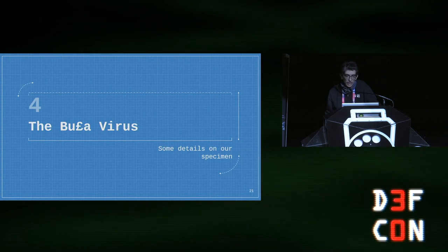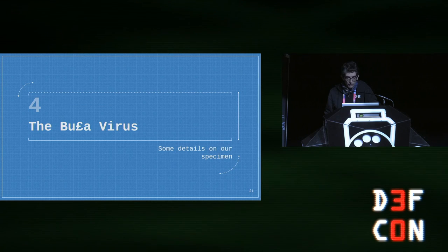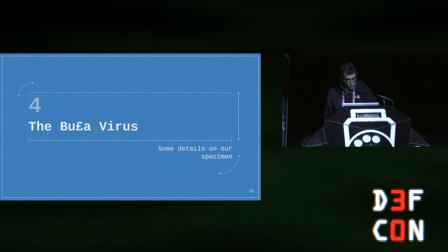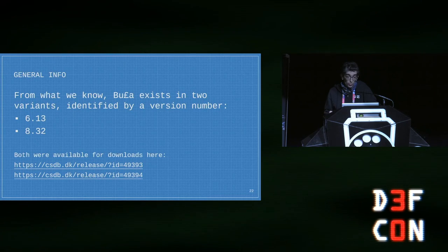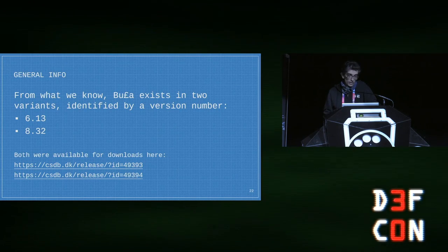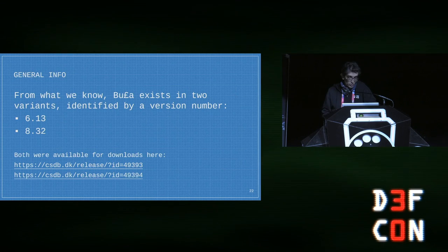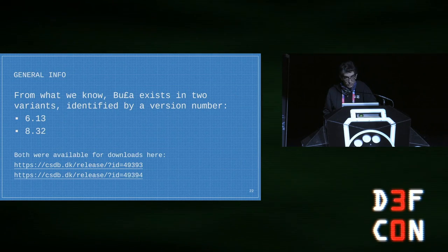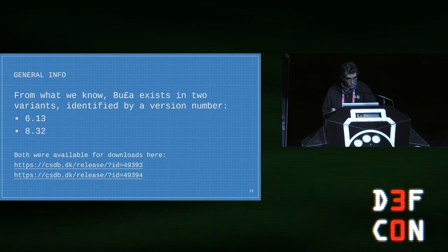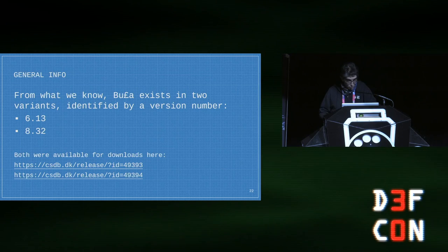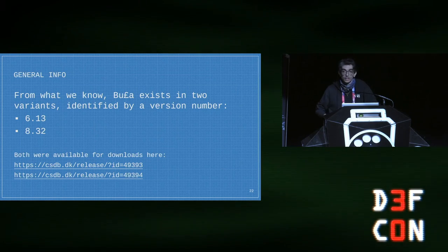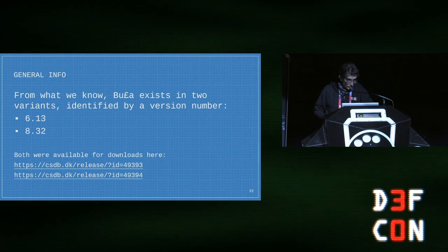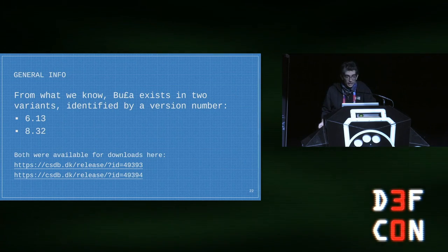Let's now give some details about our specimen — the virus itself. The virus exists in two variants, identified by version numbers 6.13 and 8.32, so we have major releases for that. Both are available to download if you want to look at them, replicate the analysis, or do something by yourself — you can download them from the csdb.dk site.